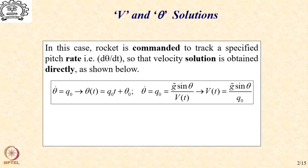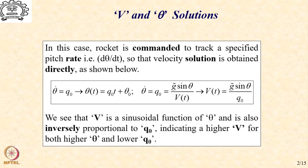We know that θ̇, which is the pitch rate, is a constant. We give it the symbol q0, which directly gives us the theta solution as q0·t + θ₀, where θ₀ is the angle at the initial time. Then we go to the second equilibrium equation, θ̇ = g̃ sin θ / v, and we directly get the velocity solution as v = g sin θ / q0. We see that v is a sinusoidal function of θ and is inversely proportional to q0, indicating higher velocity for higher θ and lower q0.